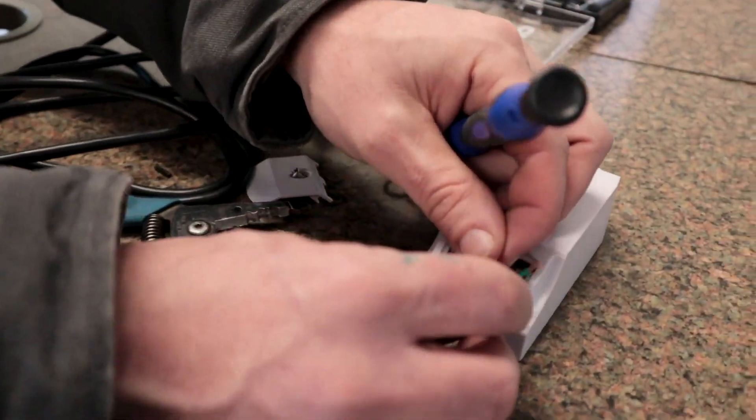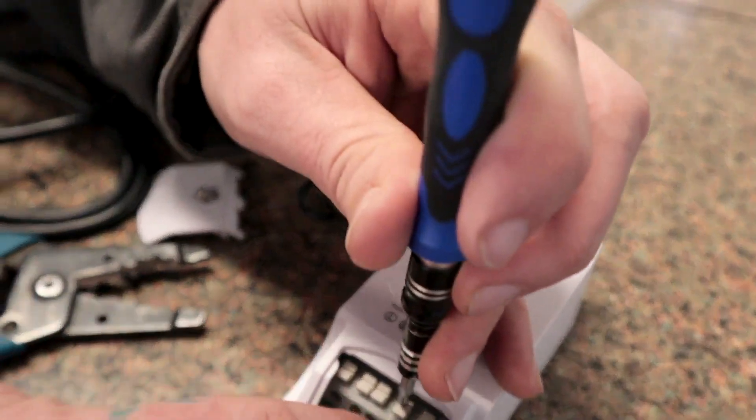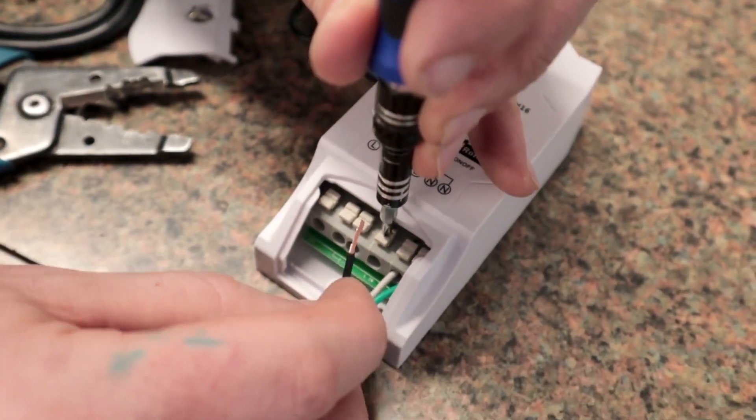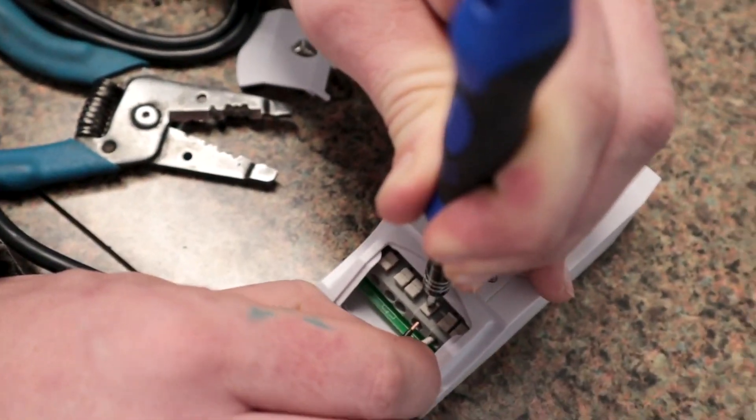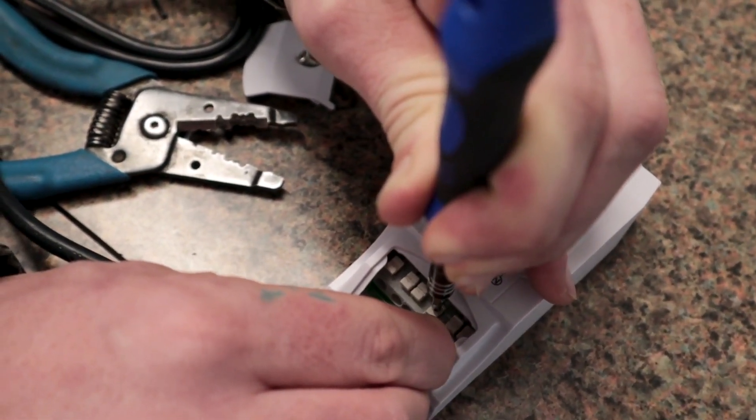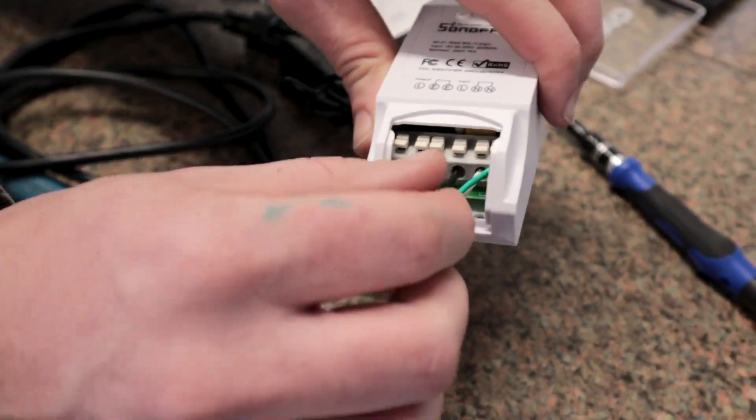And then we'll do the same thing with this black one. So I'm going to press down on this one under the L in. That's our line in. So I'll press down really hard. Push this in until it won't go in any further. Then I'll un-press it and just make sure that it has a nice solid connection. I kind of pull on it.